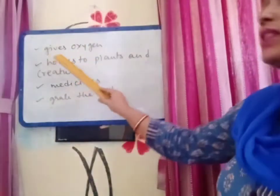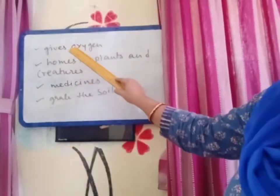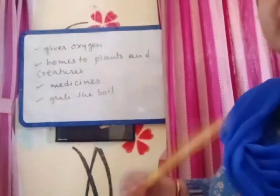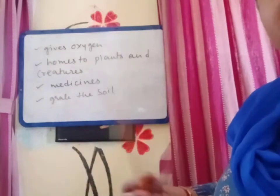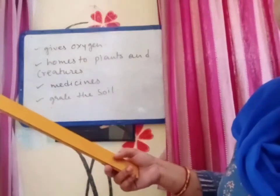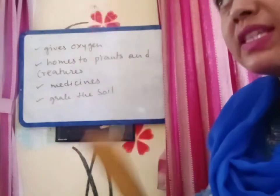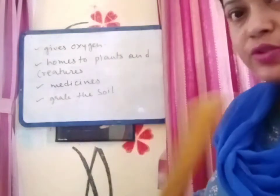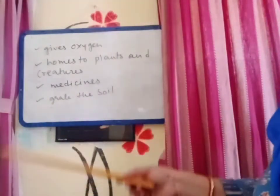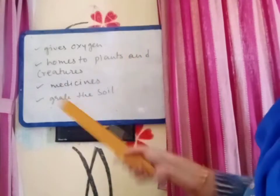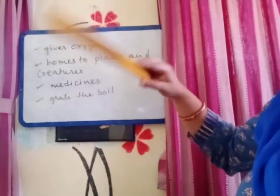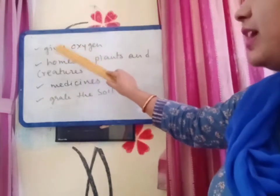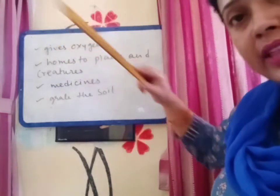Number 1: it gives oxygen. You know that plants take carbon dioxide and give out the oxygen. Oxygen is the thing that we need to breathe, so it is very important for us. Therefore, forests help us to increase the oxygen level in the environment. So the first and foremost thing is that it gives oxygen to the environment.